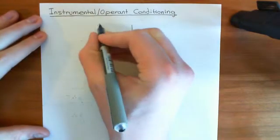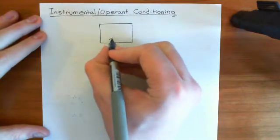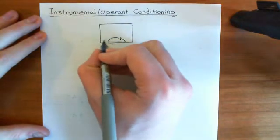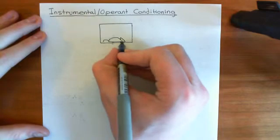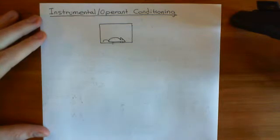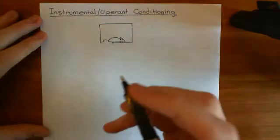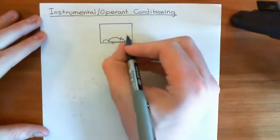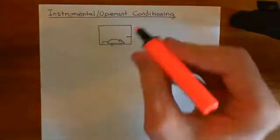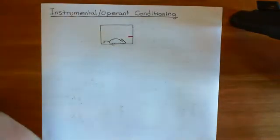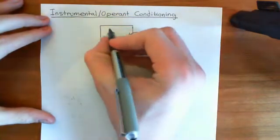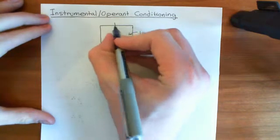So this is our box here and we're going to put our rat in the box. Here's our rat and it's in this box. It's a hungry rat, and that's very important. Motivational state is an extremely important part of instrumental or operant conditioning. We're basically going to have a special set of apparatus in this box — the rat is going to have a lever. And basically, every time the rat presses this lever, a food pellet will drop from the roof.